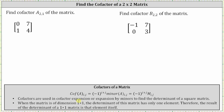The cofactor of a sub i comma j is equal to negative one raised to the power of i plus j, times the minor of a sub i comma j. The minor of a sub i comma j is equal to the determinant of the matrix formed by eliminating row i and column j from matrix A.